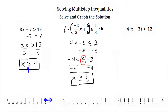Our solution is x has to be greater than or equal to 3/4. To graph that on the number line, we go to 3/4, which is a little bit less than 1, and we put a solid point because this is a greater than or equal to. So 3/4 is a valid solution, and we shade every number greater than that — everything to the right on the number line.